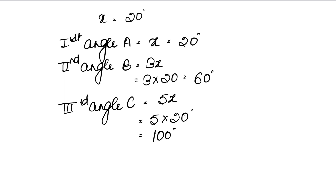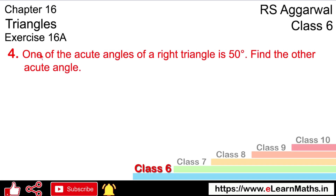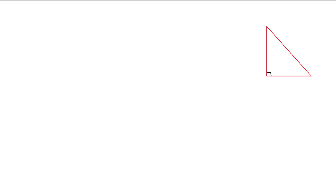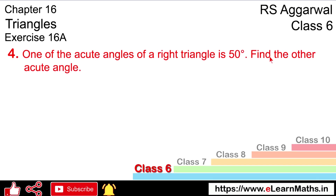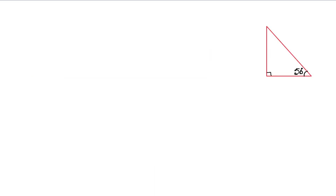Let's do question number 4 of exercise 16A. Question number 4 says: one of the acute angles of a right triangle is 50 degrees. In a right triangle, we know one angle is 90 degrees. Find the other acute angle.